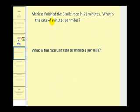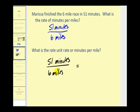Here's another example. Marissa finished the six-mile race in 51 minutes. What is the rate of minutes per miles? So we're comparing minutes to miles, therefore the rate would be 51 minutes per six miles. If we want to know the unit rate or minutes per one mile, we would take this rate and rewrite it with a denominator of one mile.